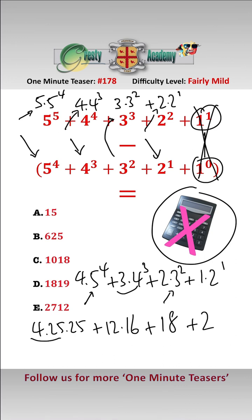4 times 25 is 100 times 25, that gives us 2500, add 192 which is 12 times 16, add 18, add 2, that gives us 2712, which is answer E.